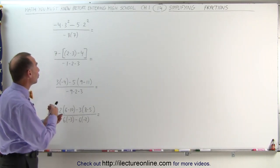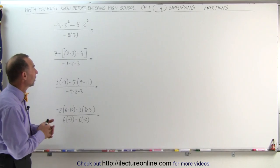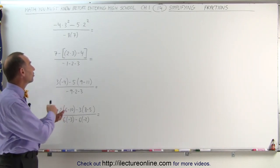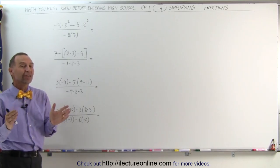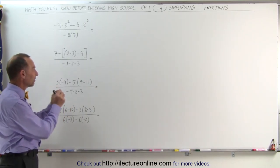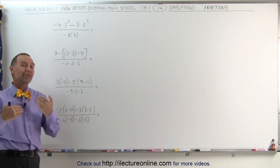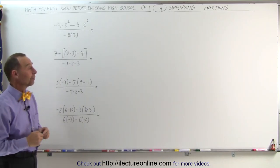The rule is that we take care of the exponents first, then the multiplication and division, then the addition and subtraction. And, by the way, if there are parentheses, let's work those out first — start from the inside to the outside. Also, when you have fractions, you must separately reduce the numerator and reduce the denominator before you start simplifying between the numerator and the denominator.